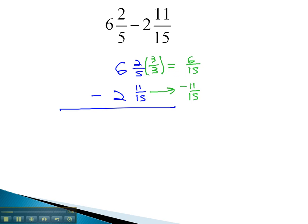This is where we are going to have to borrow. So we'll come to the 6 and borrow one from it. 6 drops down to 5.